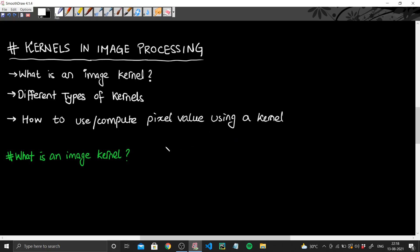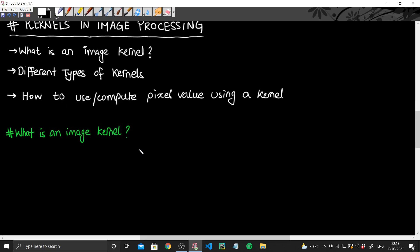So the first topic is what exactly is an image kernel. To put it in simple terms, an image kernel is an n cross n matrix that is used to apply different effects on our image.